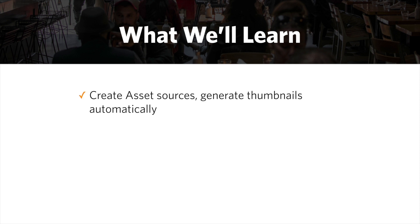Additionally, we'll learn how to create asset sources — a place where you can store files like images, PDFs, and other file types. In our case, we'll do it with images. We're also going to learn how to generate thumbnails automatically so we're delivering the appropriately sized image to the browser.